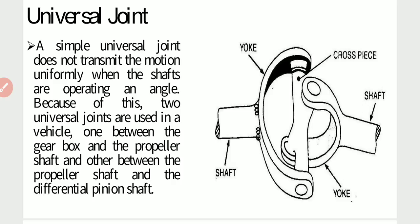A simple universal joint does not transmit motion uniformly when the shafts are operating at an angle. Because of this, two universal joints are used in a vehicle — one between the gearbox and the propeller shaft, and the other between the propeller shaft and the differential pinion shaft. When two universal joints are used together, a uniform distribution of motion can be achieved.